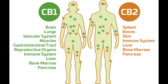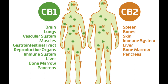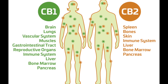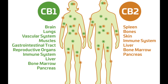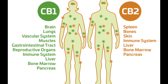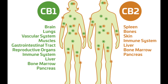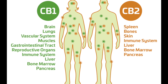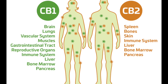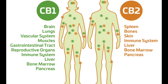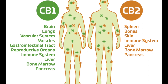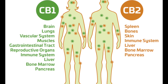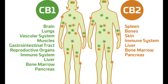Each receptor responds to different cannabinoids, but some cannabinoids can interact with both. The distribution of CB1 and CB2 receptors within the body and brain explains why cannabinoids have certain effects. CB1 receptors are found throughout the body, but are mostly present in the brain and spinal cord. They are concentrated in brain regions associated with the behaviours they influence. For example, there are CB1 receptors in the hypothalamus, which is involved with appetite regulation, and the amygdala, which plays a role in memory and emotional processing. CB1 receptors are also found in nerve endings, where they act to reduce sensations of pain.